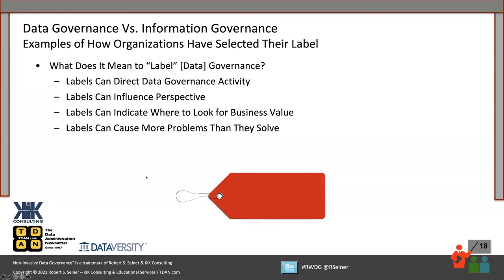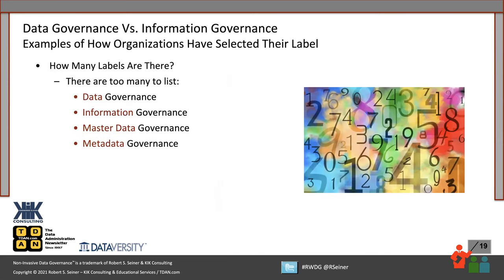The truth is that if we start adding too many labels to what we're calling governance, it potentially may cause more problems than it solves. If you call it information governance, people may say the industry has kind of settled on the term data governance. But there's a big call for people calling it information governance now, as there are a lot of information governance conferences and information available. So what are the different labels that are being used out there presently?